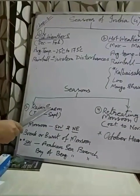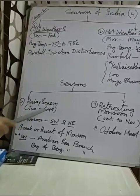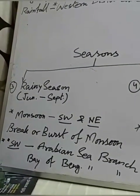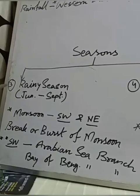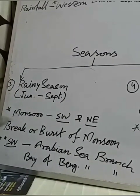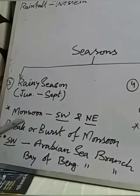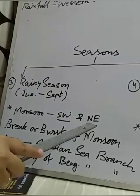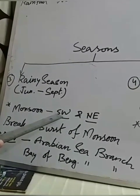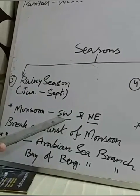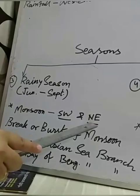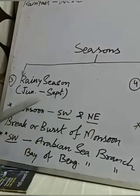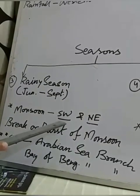Now our third season is the rainy season, from June to September. This is the most important season for our country because our economy completely depends on it. Huge amounts of rain occur due to monsoon winds. Monsoon wind has two branches — southwest and northeast. Southwest monsoon blows from the Arabian Sea towards our mainland, while the northeast wind blows from the northeast part of our country and, when it travels over the Bay of Bengal, picks up moisture and brings rain. For this rainy season, the southwest branch is the most important.